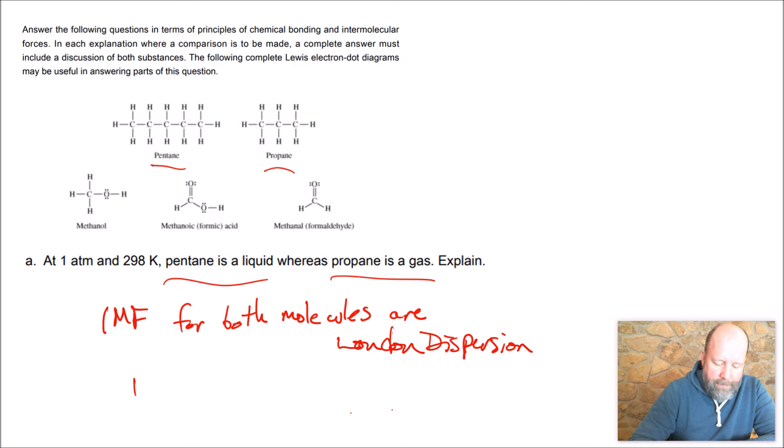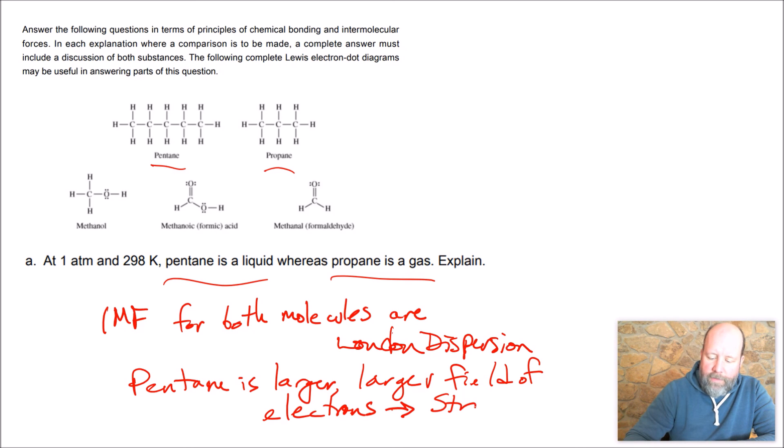But because pentane is larger, and that means a larger field of electrons, and that means stronger London dispersion forces. And with stronger forces, stronger IMF, that means a higher boiling point.